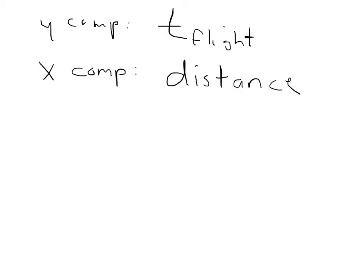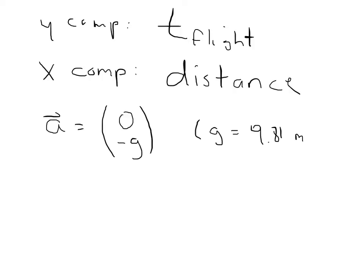Let's write down our acceleration, velocity, and position. I'm going to use column notation. The acceleration is going to be zero in the x direction and −g in the y direction. As a reminder, g is the acceleration due to gravity and it's 9.81 meters per second squared.